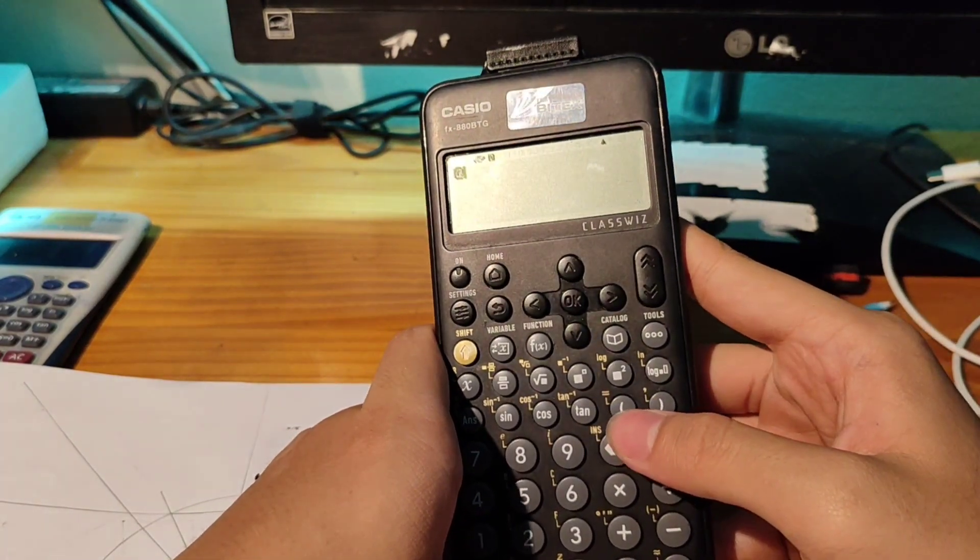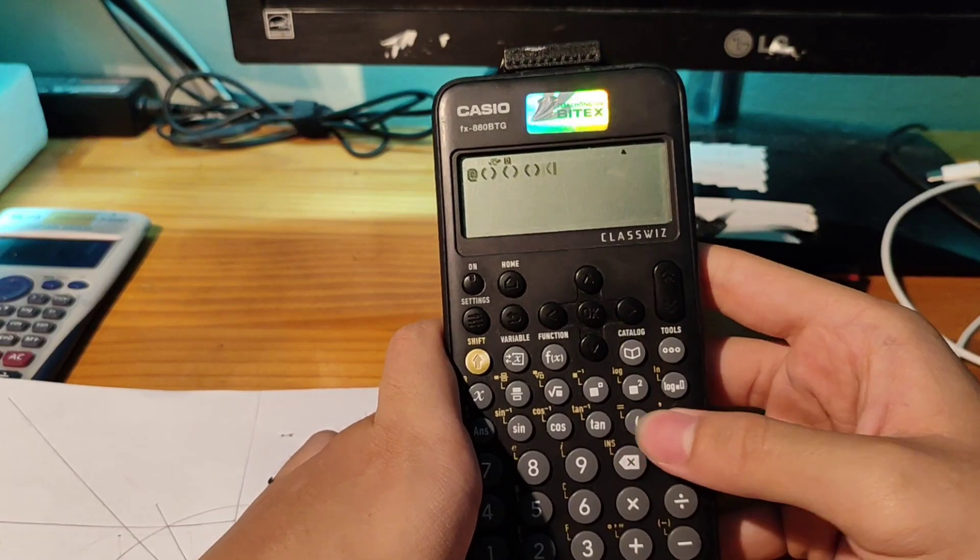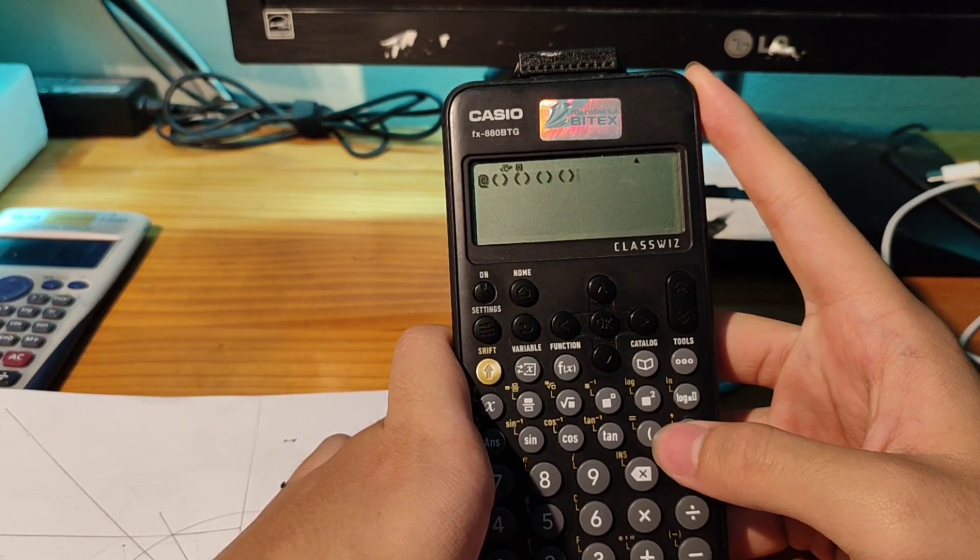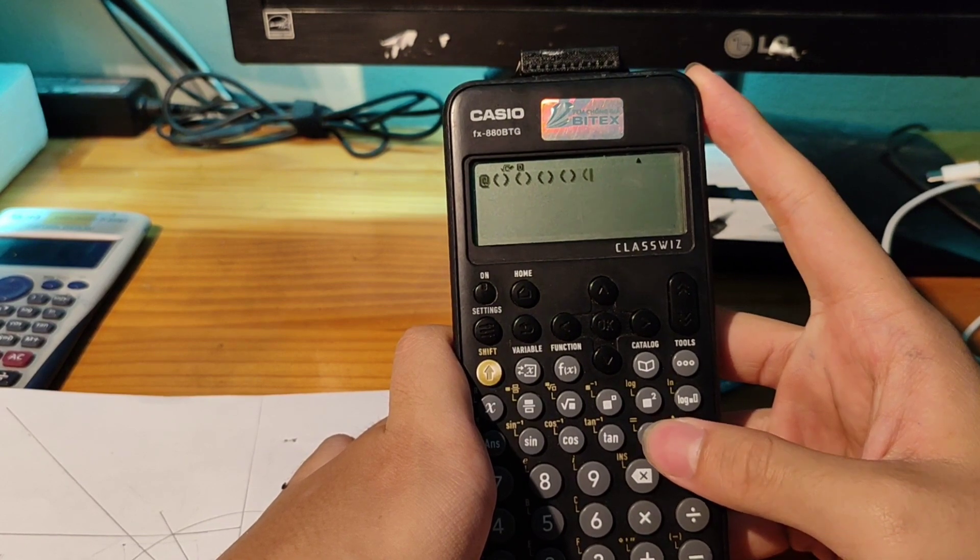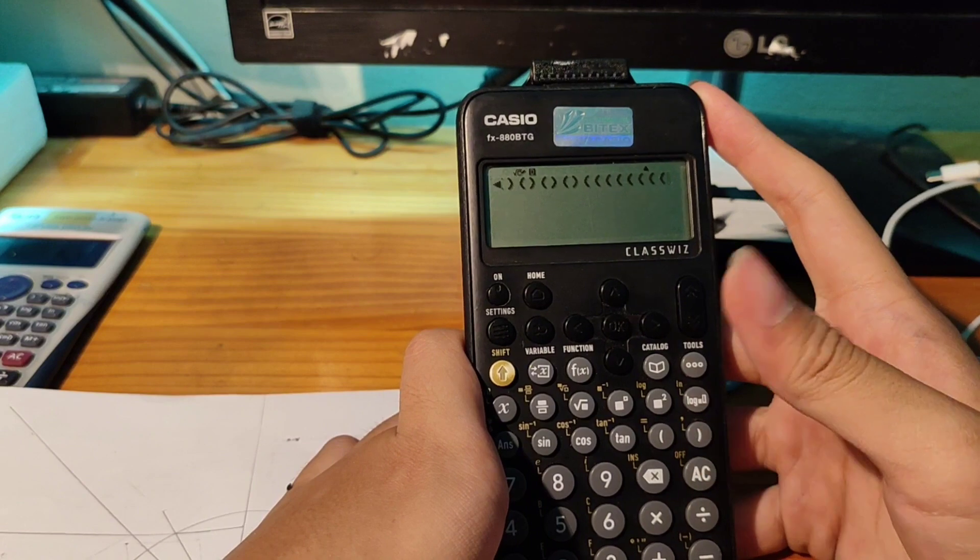Press open parentheses, close, open, close, open, close, four times, two here, and press eight times open parentheses: one, two, three, four, five, six, seven, eight, okay? Right here.